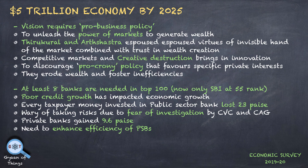India has set a goal of becoming a 5 trillion dollar economy by 2025. To achieve this vision, a pro-business policy needs to be adopted to unleash market power and generate wealth. In support of this, Thirukkural and Arthashastra are quoted. Market competition brings creative destruction and drives innovation. On the other hand, pro-crony policies that promote vested private interests and increase inefficiency must be discouraged.